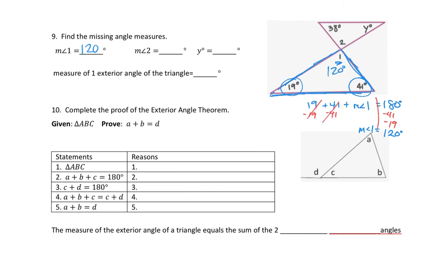If angle 1 is 120 degrees, what do we know about angle 2? They're vertical angles — X marks the spot for vertical angles. So angle 2 is also 120 degrees.